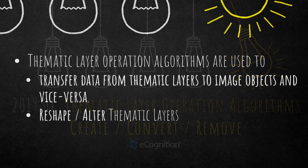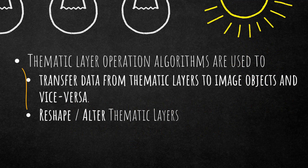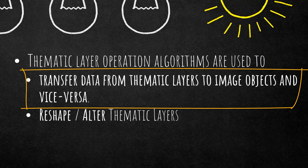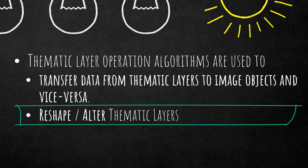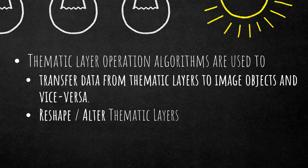In general, the thematic layer operation algorithms are used to transfer data from thematic layers to image objects and vice versa. You can write information from your thematic layer into image objects and also the other way around. Additionally, you can reshape and alter your thematic layers within eCognition — applying smoothing algorithms and classical GIS operations like union, intersect, and subtract.